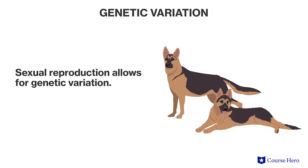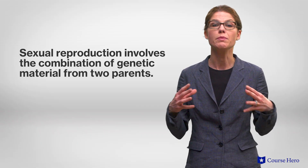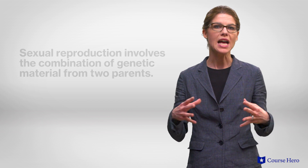While asexual reproduction has its benefits, the transfer of genetic material that occurs during sexual reproduction allows for genetic variation in offspring. This genetic variation allows the potential for some offspring to have an increased chance to survive their environment. Sexual reproduction involves the combination of genetic material from two parents, happening through the production and transmission of sperm and egg cells, or gametes.